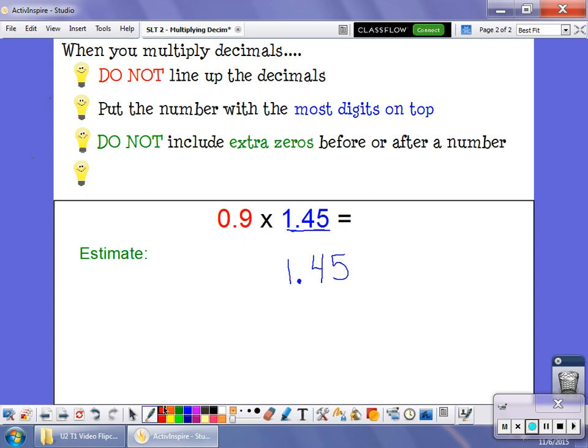Do not include extra zeros before or after a number. This zero here, if I multiply it, is just going to give me a whole bunch of zeros. So I don't include it.